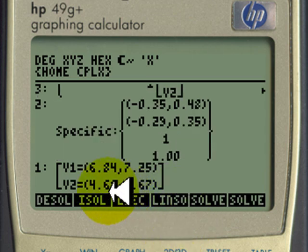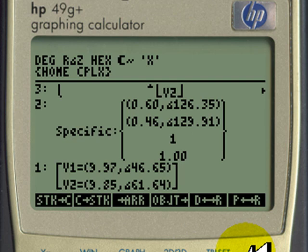And those are the two voltages V1 and V2 in rectangular mode. Of course, if we want the solution in polar form, those are the voltages: 9.97 volts RMS with 46.65 degrees, and V2 is 9.85 volts RMS with a phase of 61.64 degrees. Thank you very much.